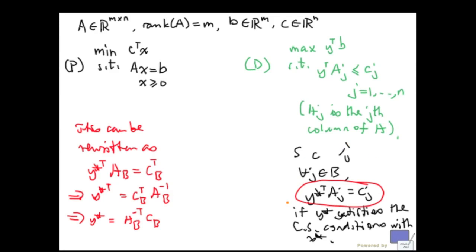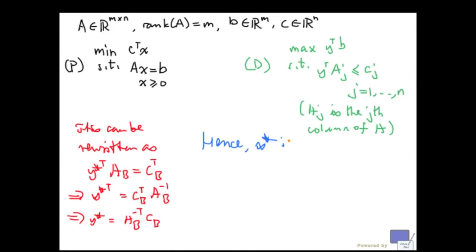Hence, x star is optimal to p if and only if y star is feasible to d. And that is true. This is true if and only if, well, we don't really need to check the constraints indexed by elements of b because they're already going to be satisfied with equality. The only inequalities that we need to check are these. So we need these to hold.